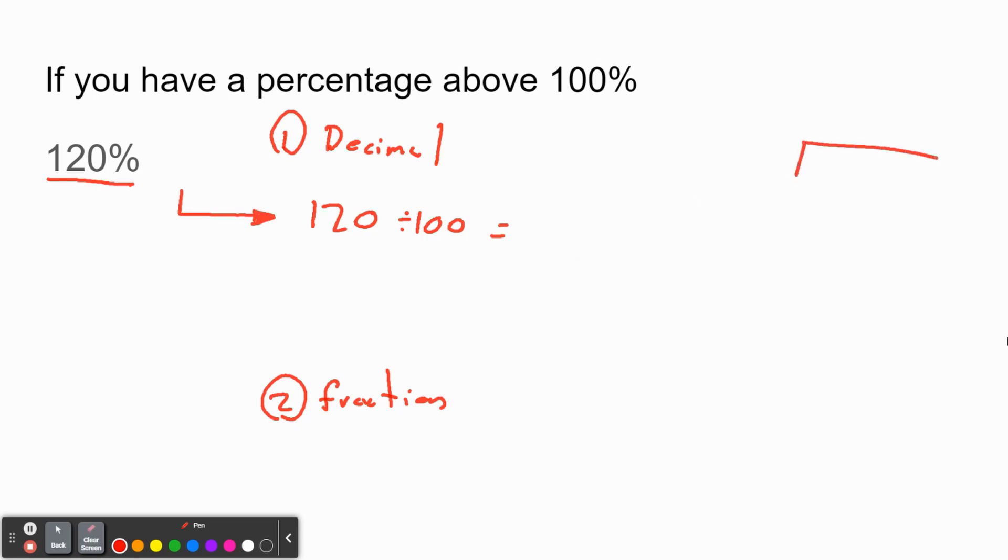So again, you could set up a long division, do 120 divided by 100. You'd get a 0 here, you'd get a 0 here, you'd get a 1 here. 100 subtract, you get 20. Bring down 0, 1.2. You could also just move your decimal point over two spots like we were doing.